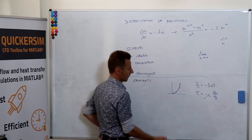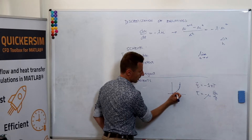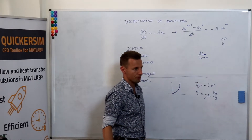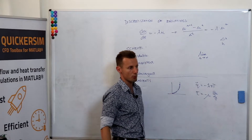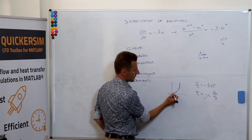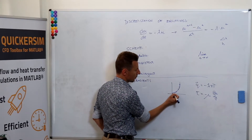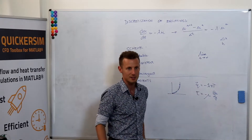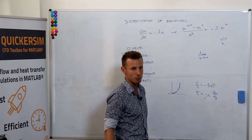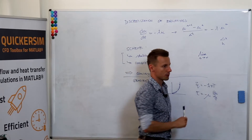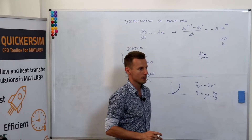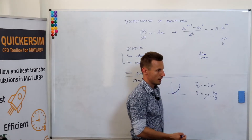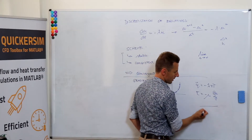Obviously, a linear approximation of this gradient between these two points is hugely underestimated, which means hugely underestimated heat flux or hugely underestimated shear force.